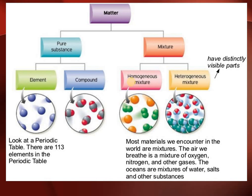So this is the matter classification: pure substance, then element and compound. In elements, one type of atom is present; in compounds, two or more types of elements are present. Now we are moving to mixtures — mixtures have two types: homogeneous and heterogeneous.